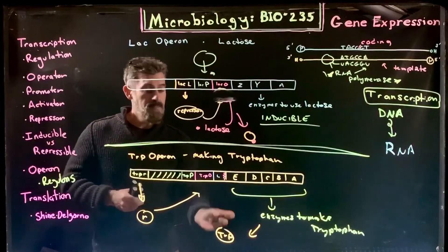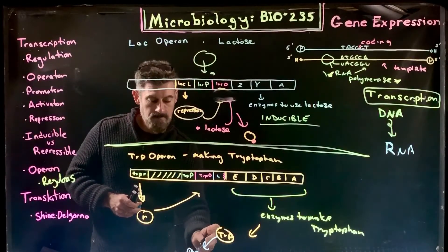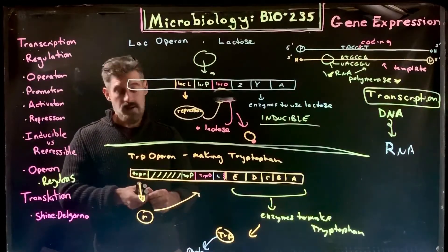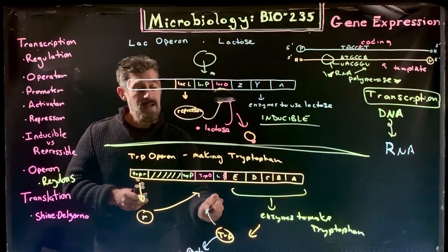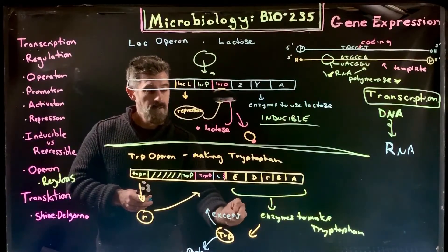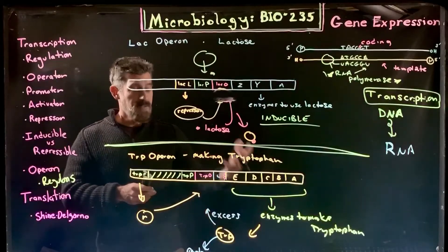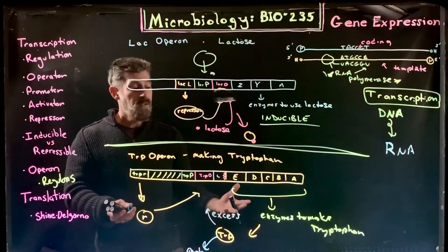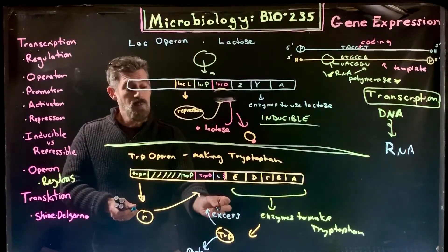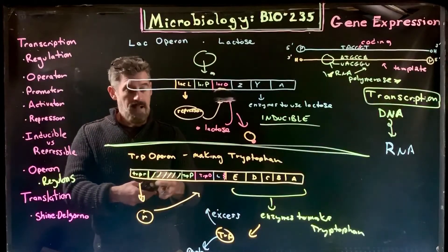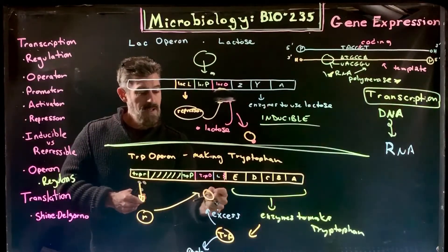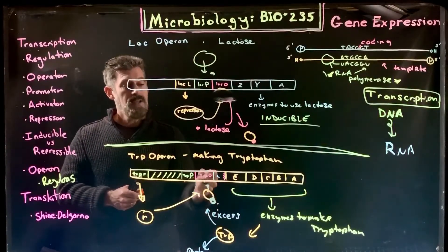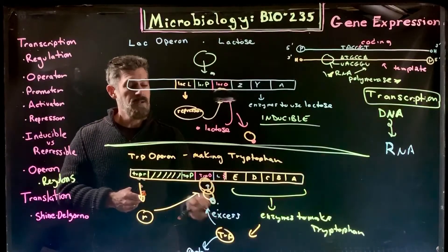If tryptophan is being used to make proteins, it's not available, and this repressor protein never binds. However, if you get an excess of tryptophan—the cell is making it but not using it all—you start to get too much. The repressor protein and excess tryptophan will form a complex and together bind to the operator and shut it down.